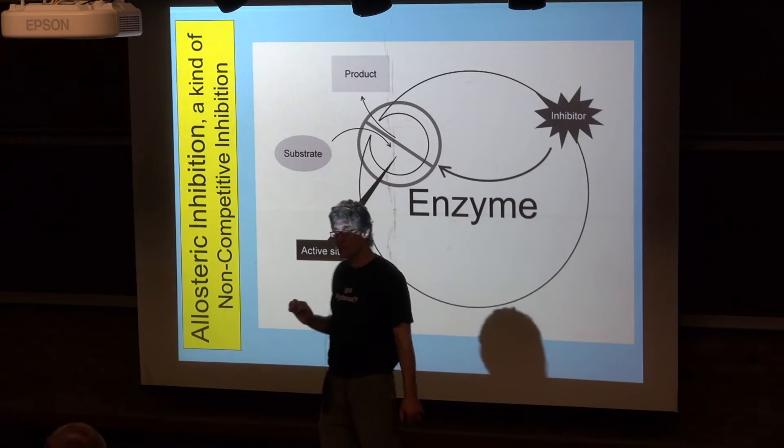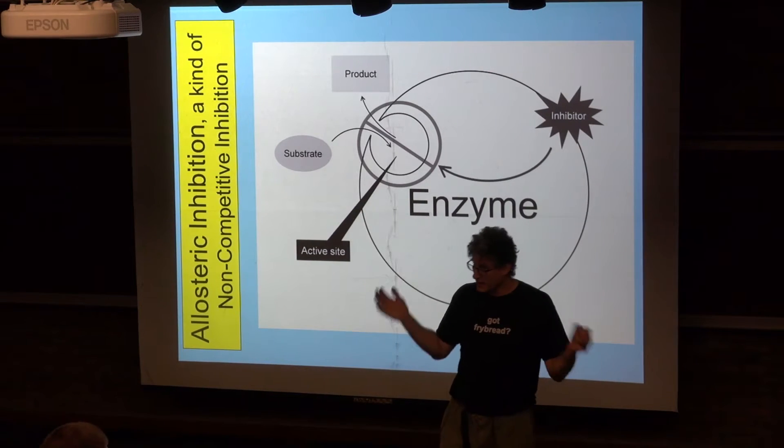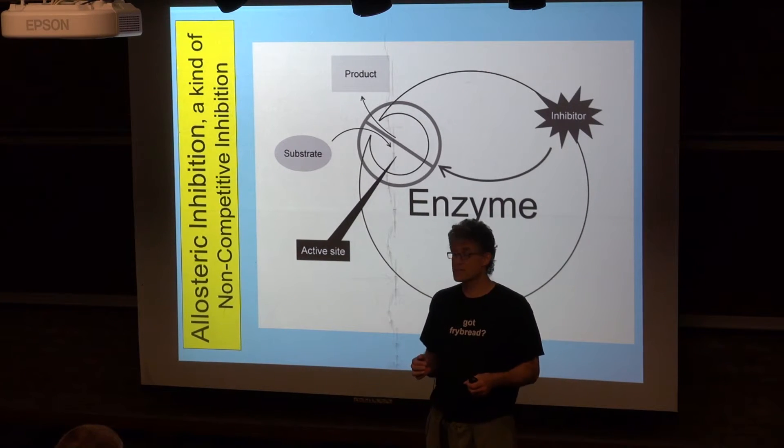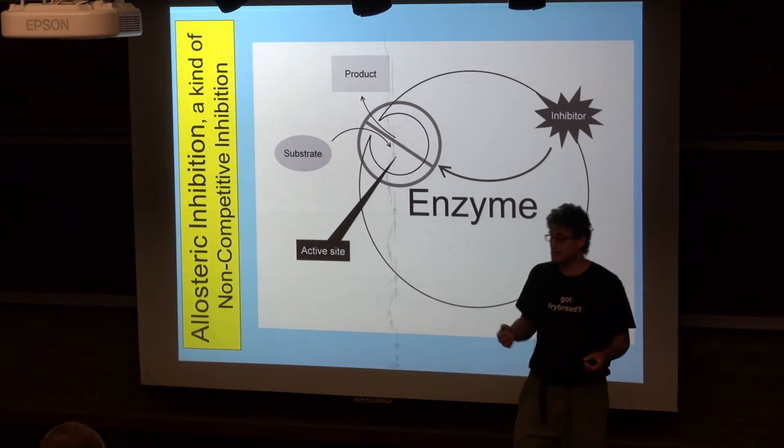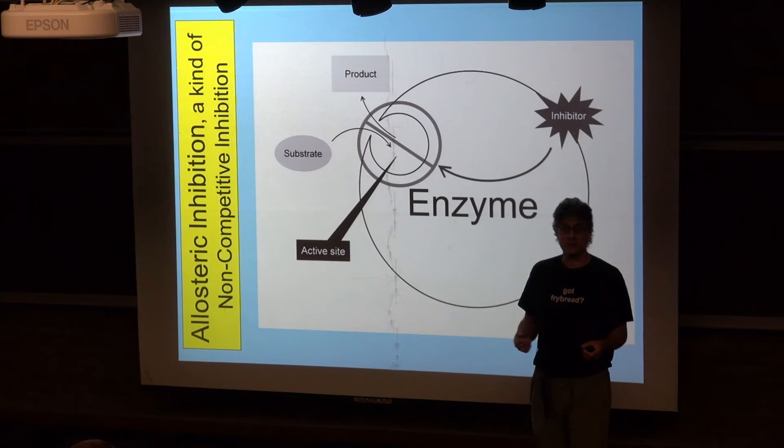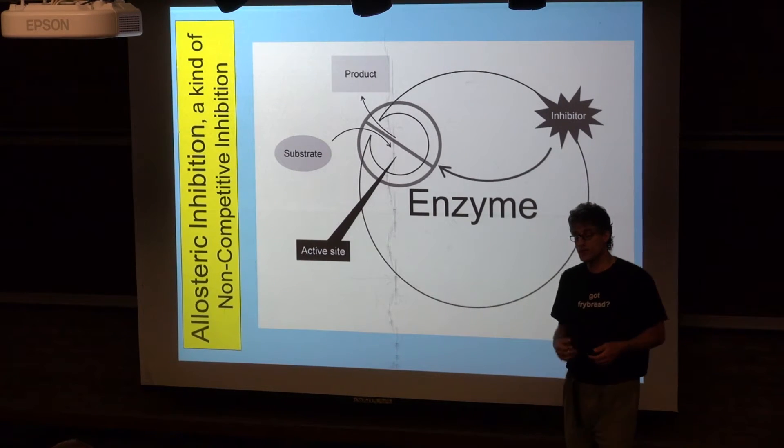Competitive inhibition can be important when we're designing drugs because one way of blocking the functioning of specific enzymes from outside the body is by putting something into the body that will preferentially interact with an enzyme and keep it from interacting with its normal substrate.